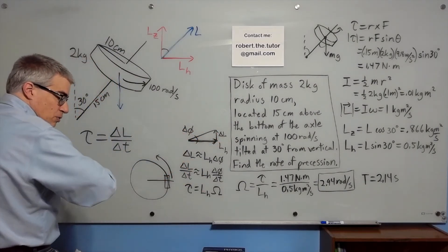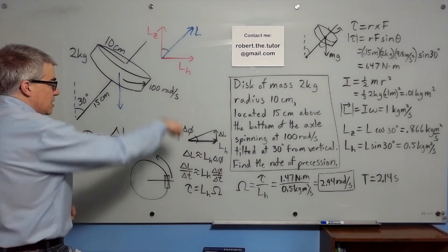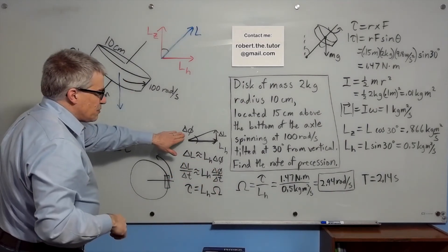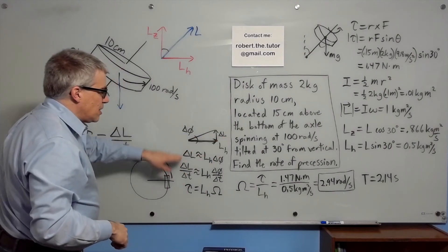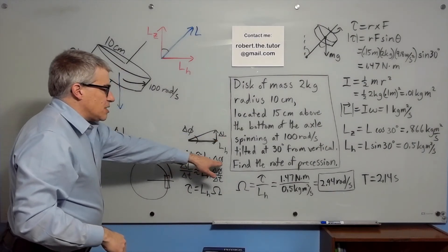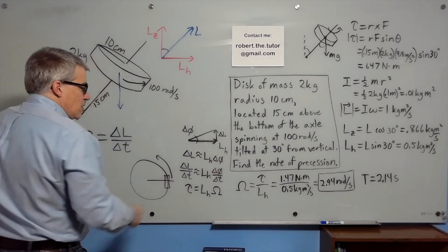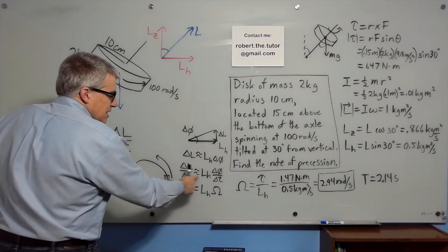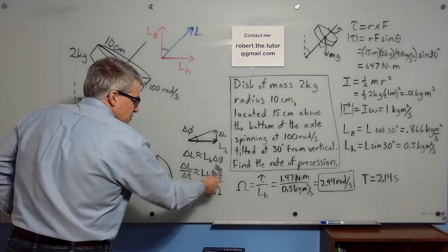So change in phi, change in L, that's going to be related basically by delta L is L horizontal change in phi. Which means delta L over delta T is L horizontal change in phi over change in T.